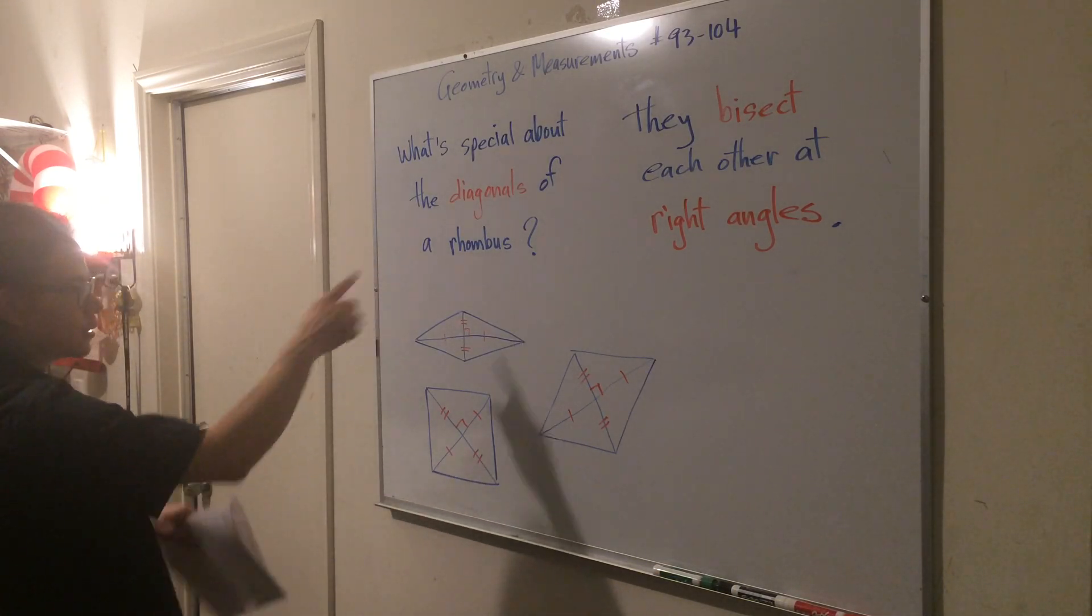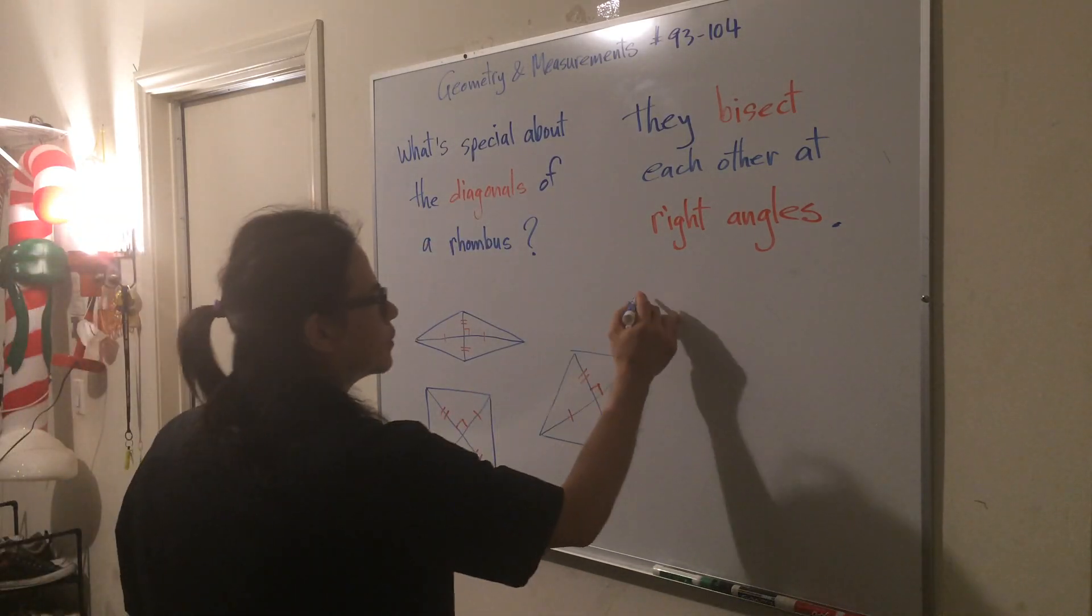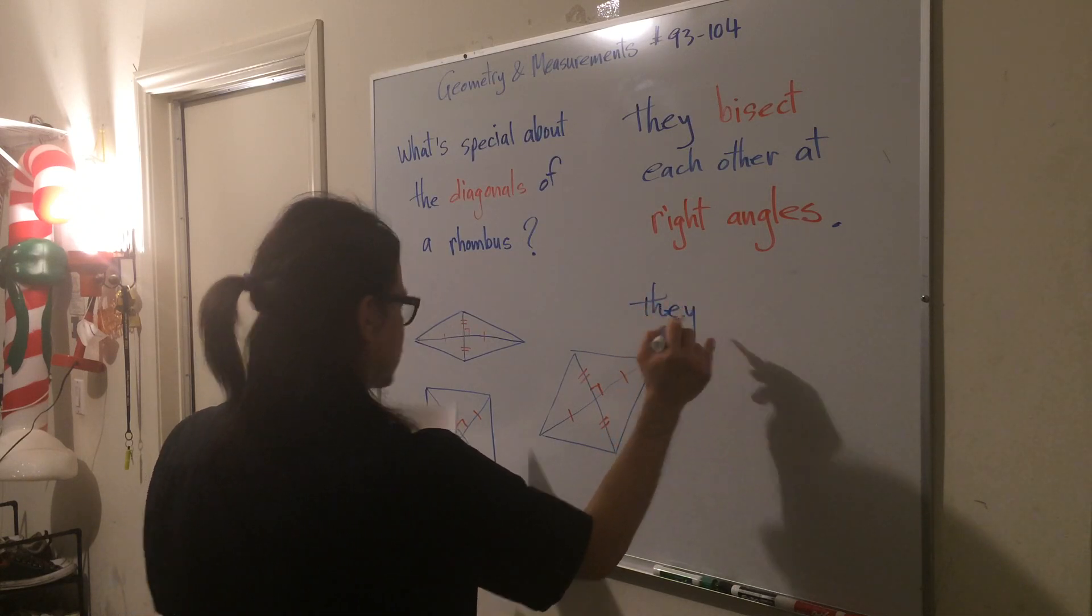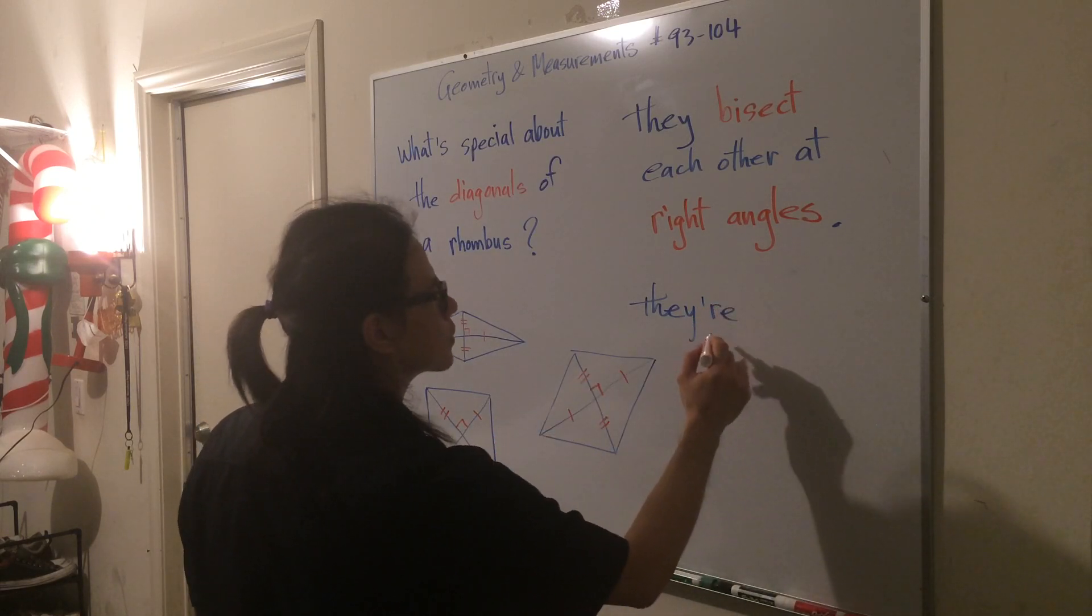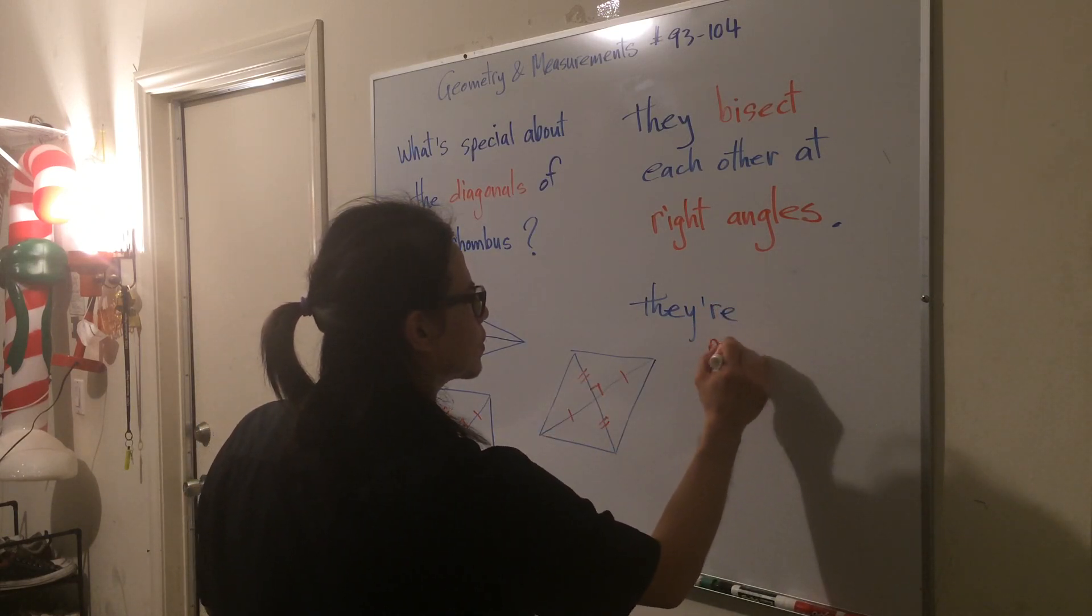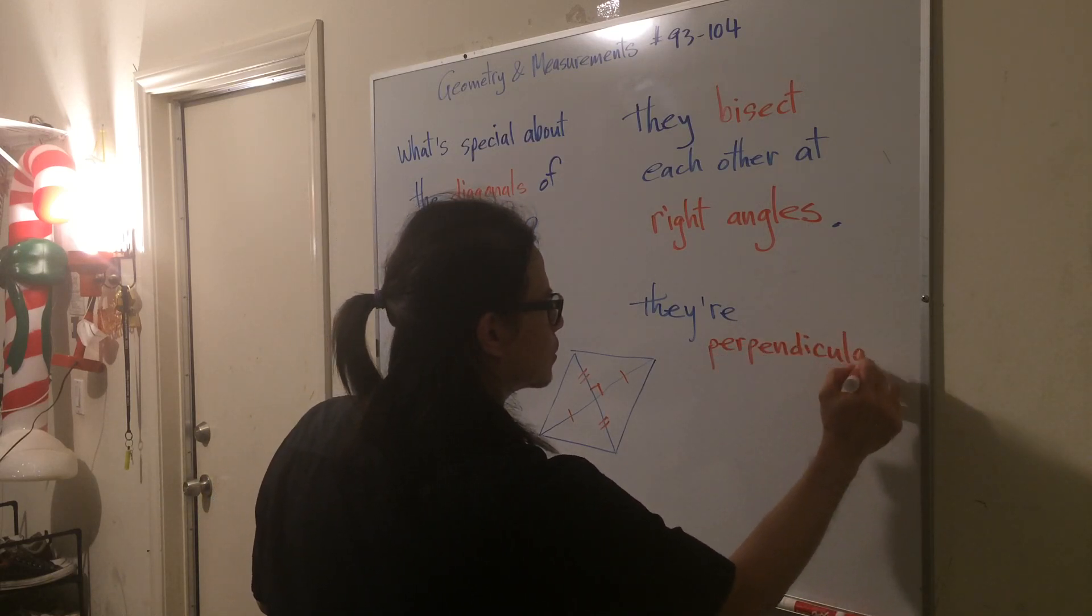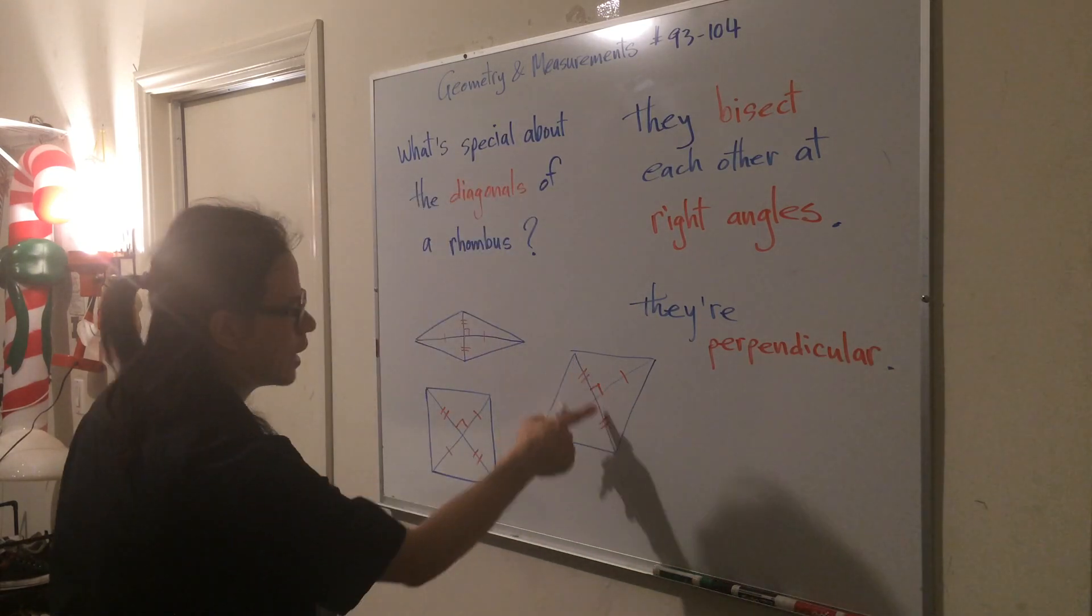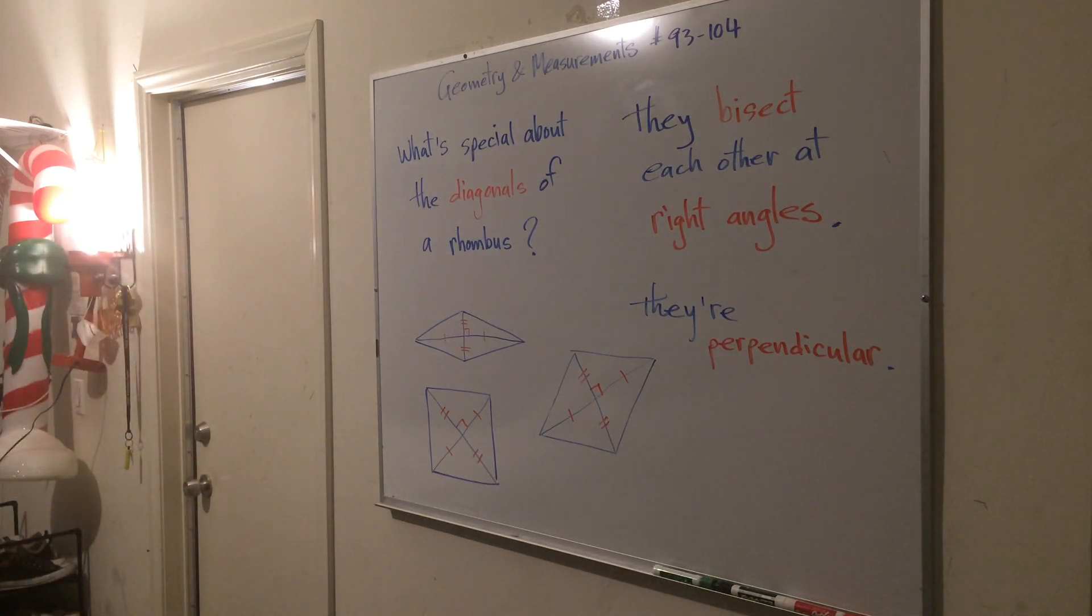So all together, you can conclude that diagonals are perpendicular. Perpendicular meaning they make 90 degrees at the point of intersection. Thank you.